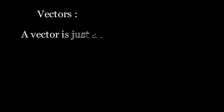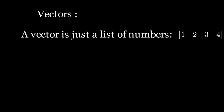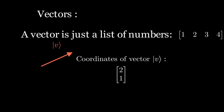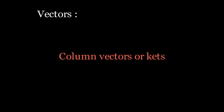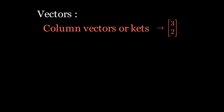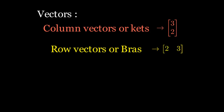Let's start with vectors. A vector is just a list of numbers. The dimension of the vector is the number of numbers in the list. As we can see, the coordinates of vector v are 2 and 1, and the dimension of this vector is 2. If the list is written vertically we call it a column vector or a ket, and if written horizontally we call it a row vector or bra.